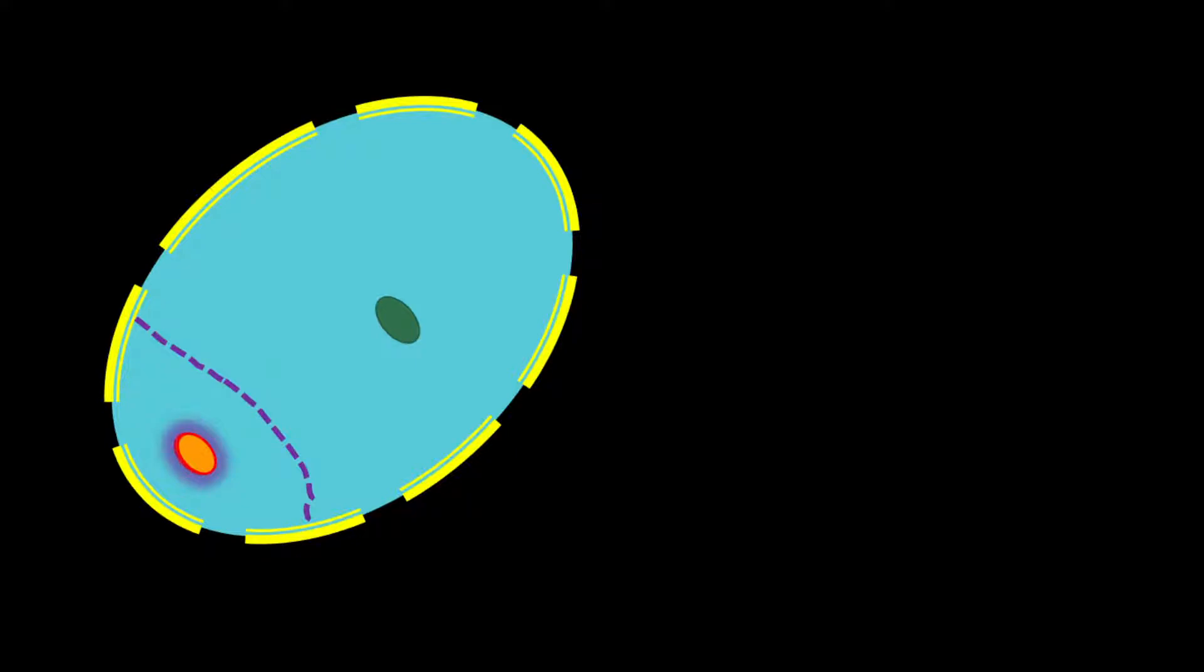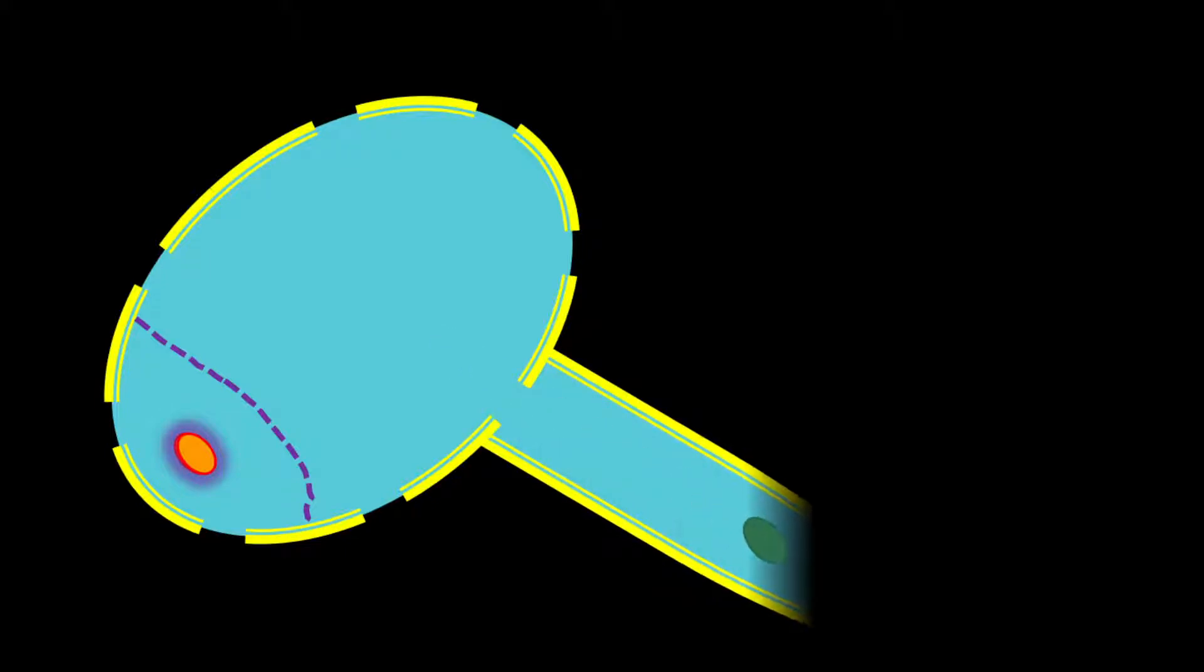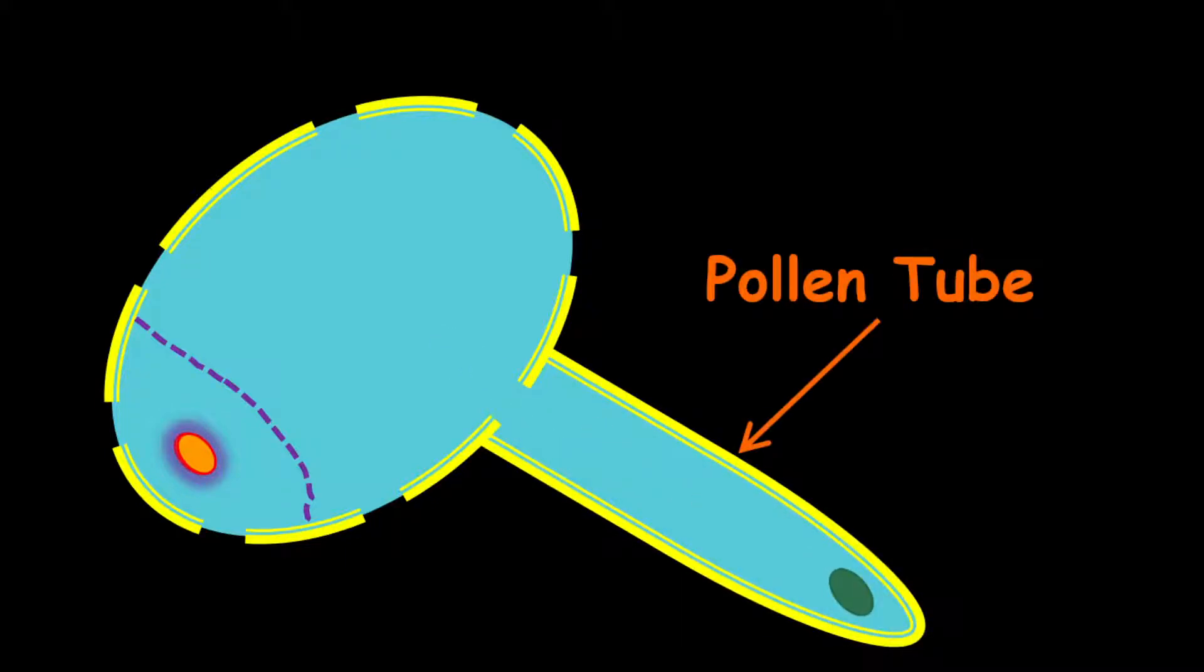Now, very importantly, the nucleus within the tube or vegetative cell will form what I call the pollen tube. After the pollen tube is formed, then the nucleus of the generative cell will divide. And after that division takes place, then the nuclear membrane will disappear, and the two new sperm cells will swim down the pollen tube and they will go towards the ovules within the ovary.